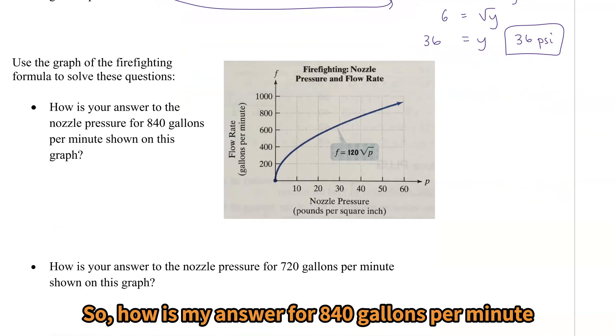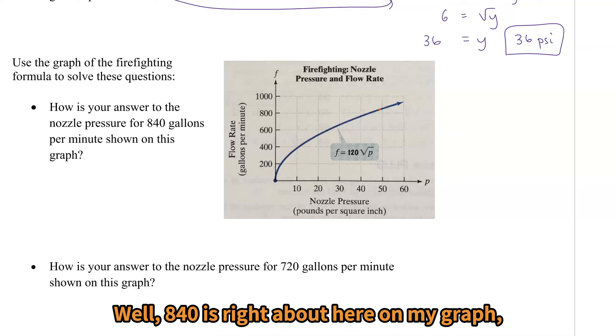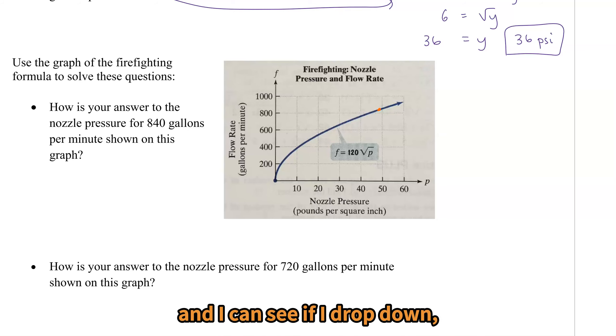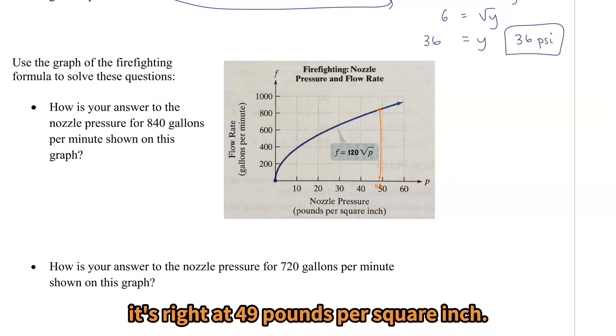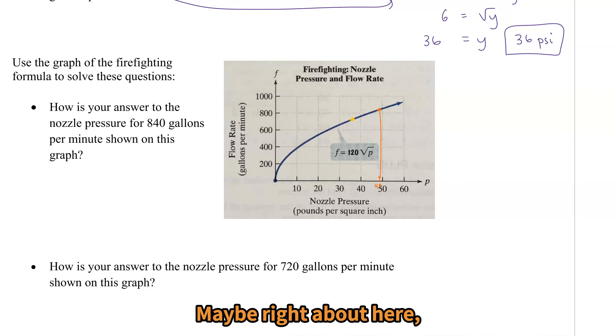Now let's take a look at a graph. So how is my answer for 840 gallons per minute shown on the graph? Well 840 was right about here on my graph and I can see if I drop down it's right at 49 pounds per square inch. For 720, similarly I look for about 720 maybe right about here and I see that if I drop it down I get about 36. So here's my 720 answer. Here's my 840 answer. Pretty nicely shown on our graph.